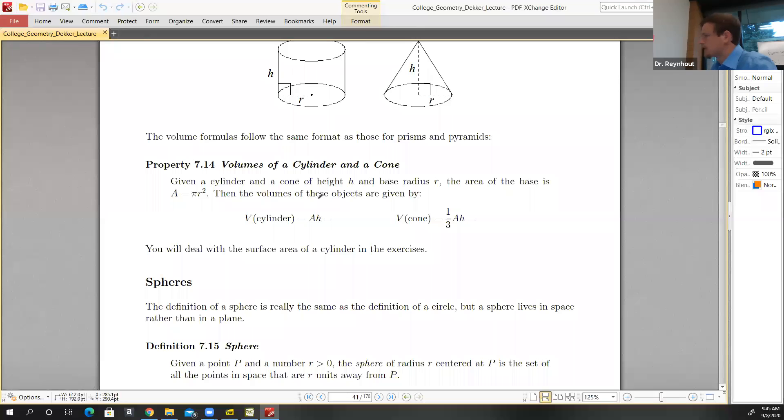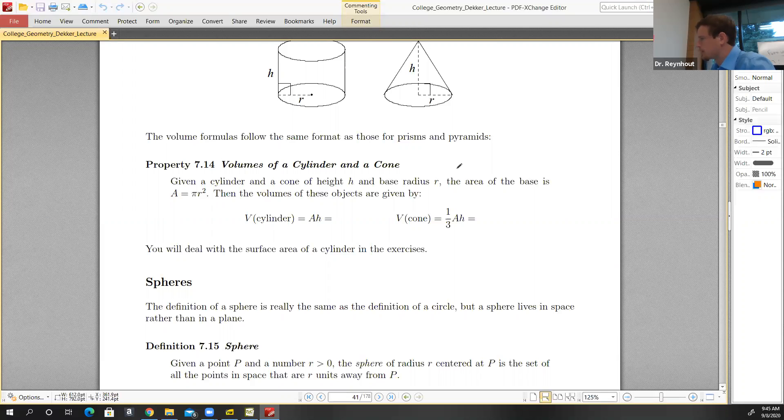In this case, the area of the base, if it's a base that is a circle, then the area of the base is simply given by πr². So we replace A with πr². πr² times the height of the cylinder.